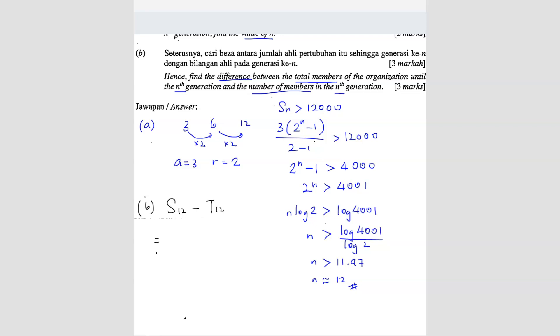So you can use the manual way. That means use the S12, SN formula. Substitute the n value as 12 minus, then use the TN formula. You can do that or you can straight away find S11.